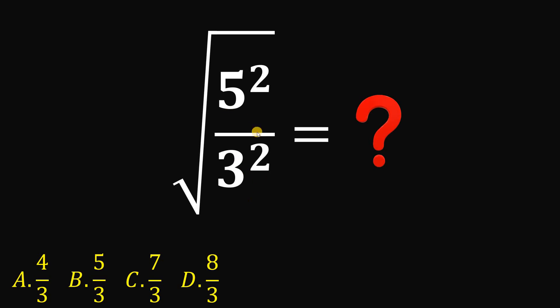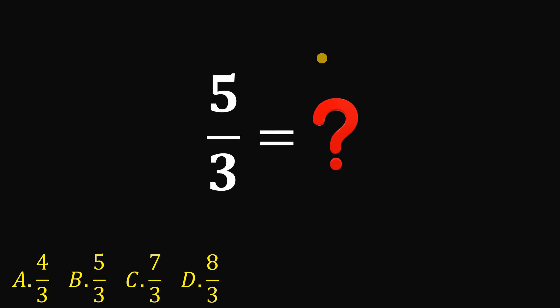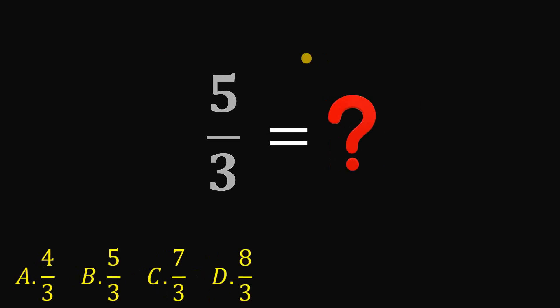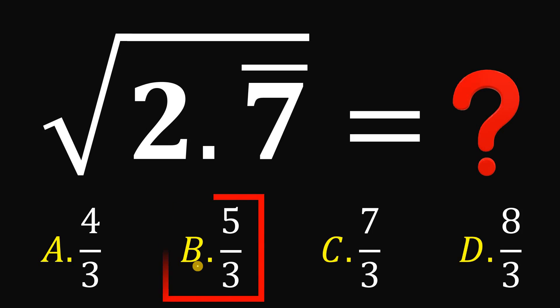So 5 squared over 3 squared — we can rewrite this as 5 over 3 raised to the power of 2. Now we can eliminate the square root and the squared. So this is just 5 over 3. And that is the answer to this question. The value of square root of 2.7 repeating must be answer B, which is 5 over 3. And as always, we are done.